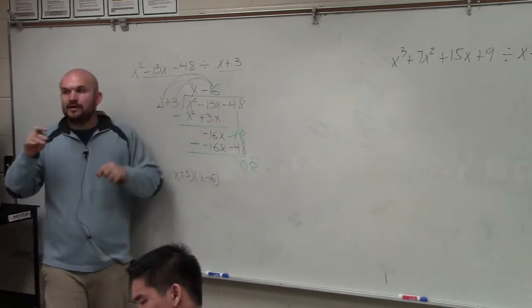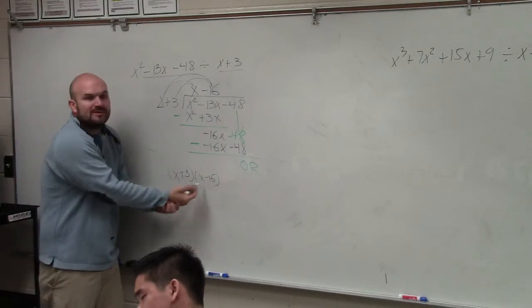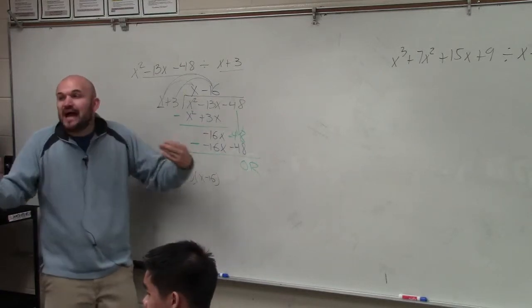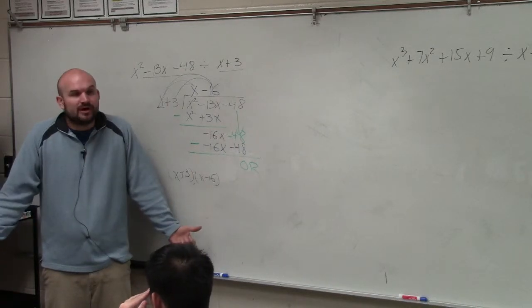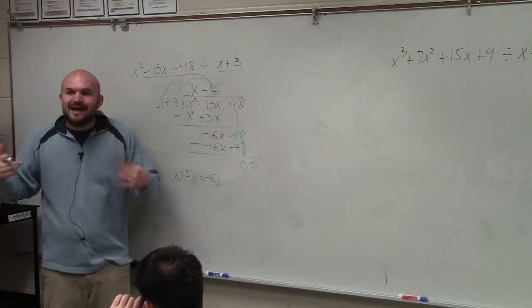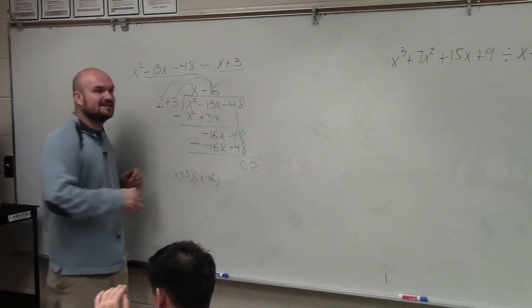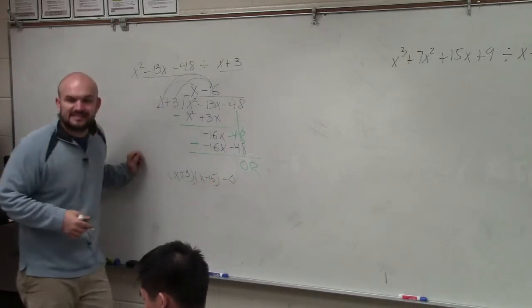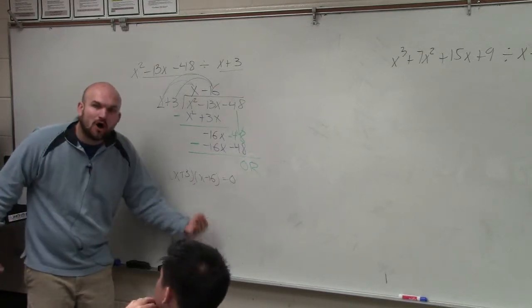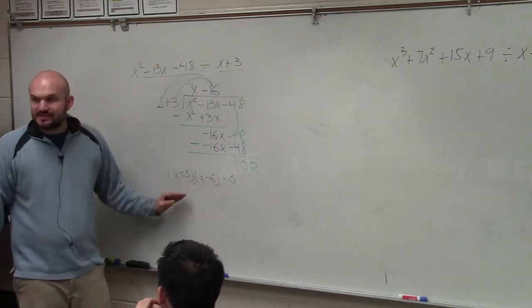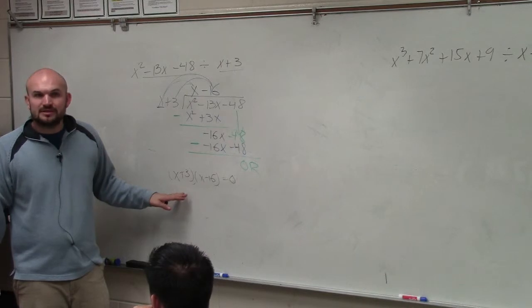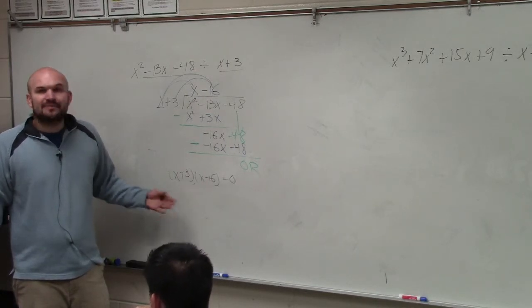Now, real quick, why would this be important? What form do we call this? Factored form. Why is the factored form so helpful to us when we're solving? What factored form allows us to do is when we can take our factored form and set it equal to zero, we can now apply the zero product property and solve for the zeros. I could now solve for the zeros, right? Does anybody know what the zeros are just by looking at them in their head? Yeah. x equals -3 and positive 16.